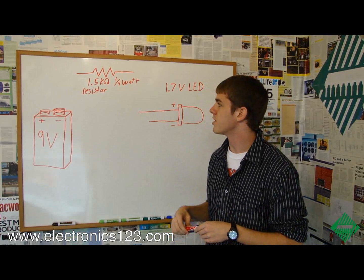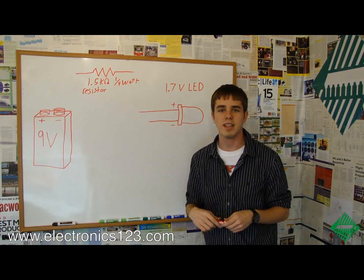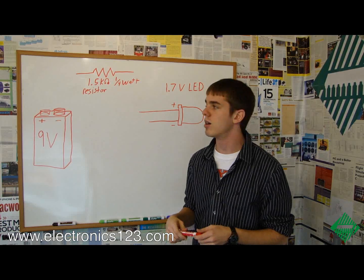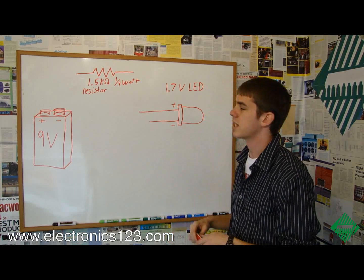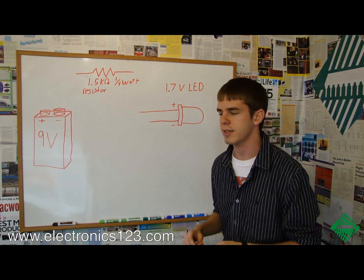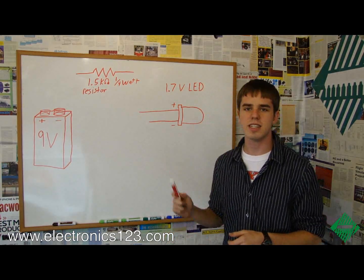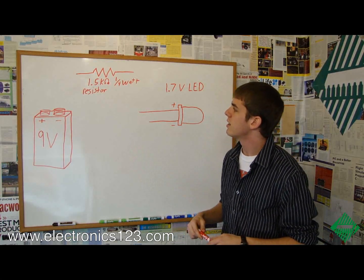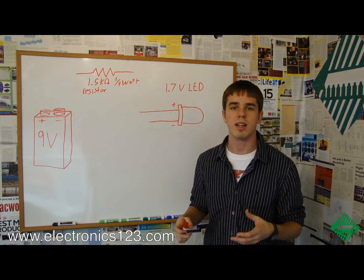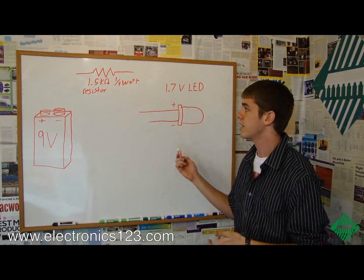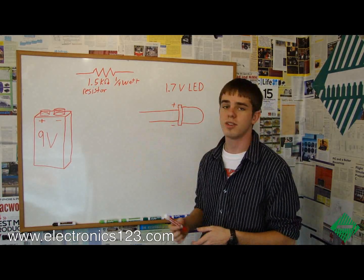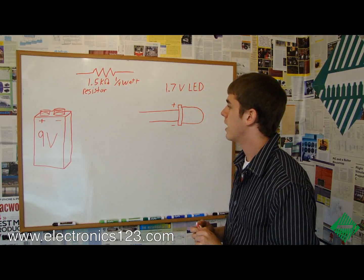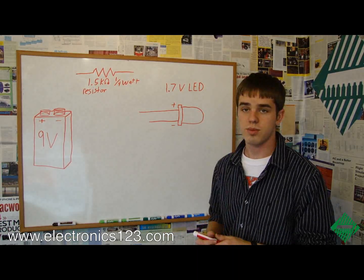Now that we've established exactly what we need and gathered our parts, we can design a circuit that allows these things to be connected together and powers our LED. The biggest thing to keep in mind is that we can't wire this in parallel — it has to be wired in series, or at least the resistor has to be wired in series with the LED.